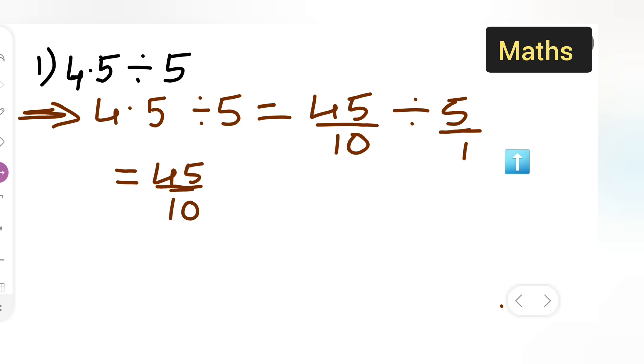So it will be multiplied by reciprocal of 5, which is 1 upon 5. So basically you can cancel this. 5 ones are 5, 5 nines are 45. So basically your answer is 9 upon 10.